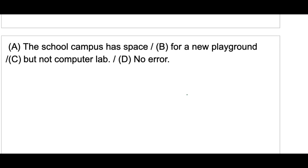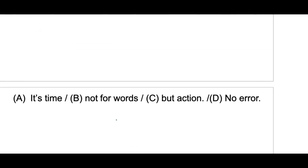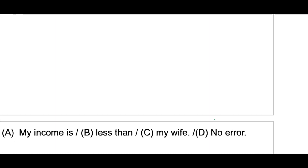Next: 'The school campus has space for a new playground but not computer lab.' Here 'but' connects the two parts, so for parallelism it should be 'but not for a computer lab.' Another example: 'It is time not for words but for actions' — this is the correct parallel structure.